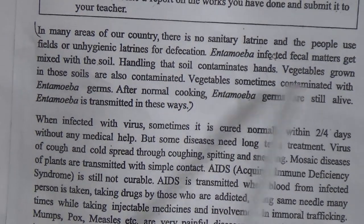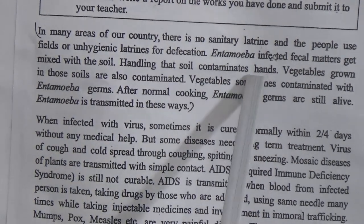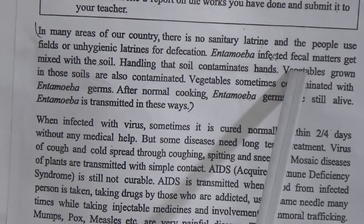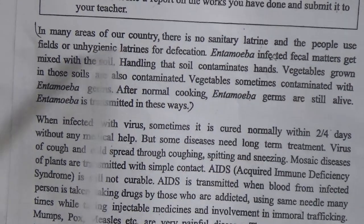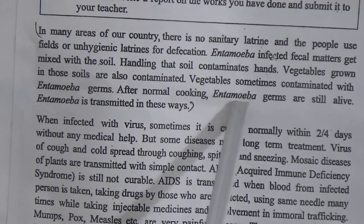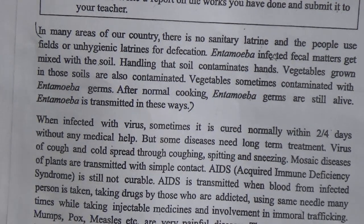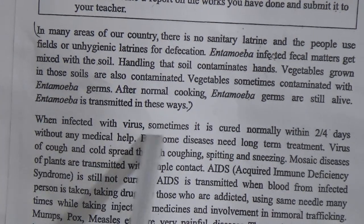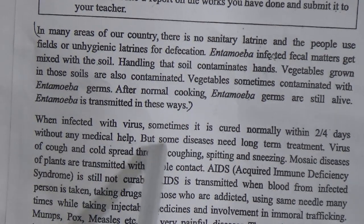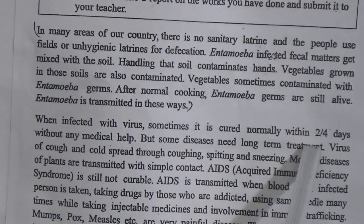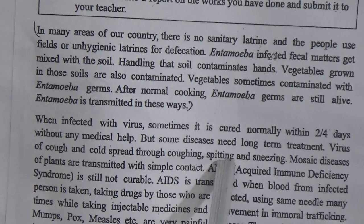Antamoeba-infected fecal matter gets mixed with the soil. Handling that soil contaminates hands. Vegetables grown in that soil are also contaminated, and sometimes even after normal cooking, Antamoeba germs are still alive — this is how Antamoeba is transmitted. When infected with a virus, it is sometimes cured normally within 2 to 4 days without medicine, but some diseases need long-term treatment. The virus of cough and cold spreads through coughing, spitting, and sneezing.